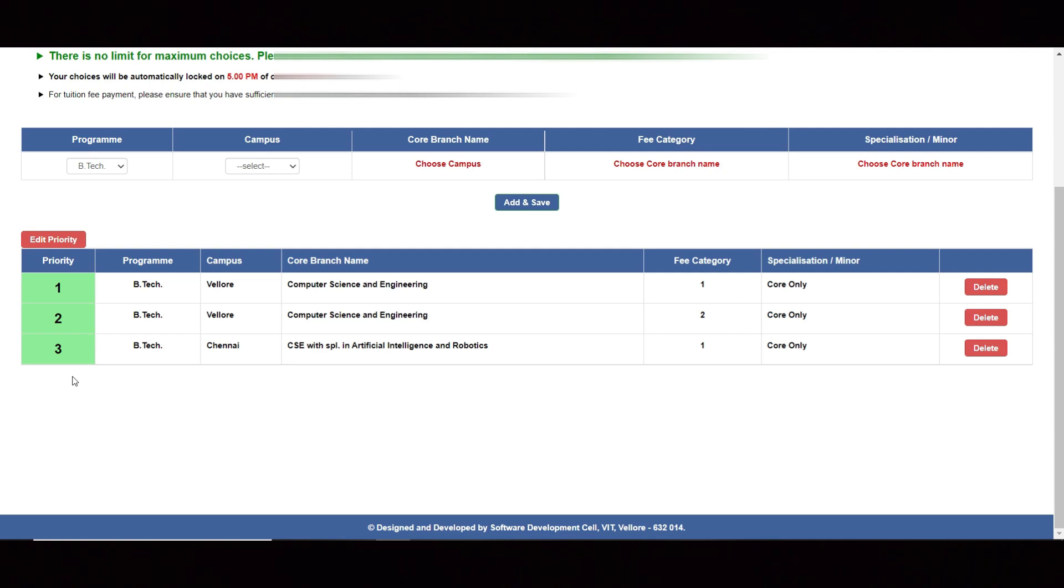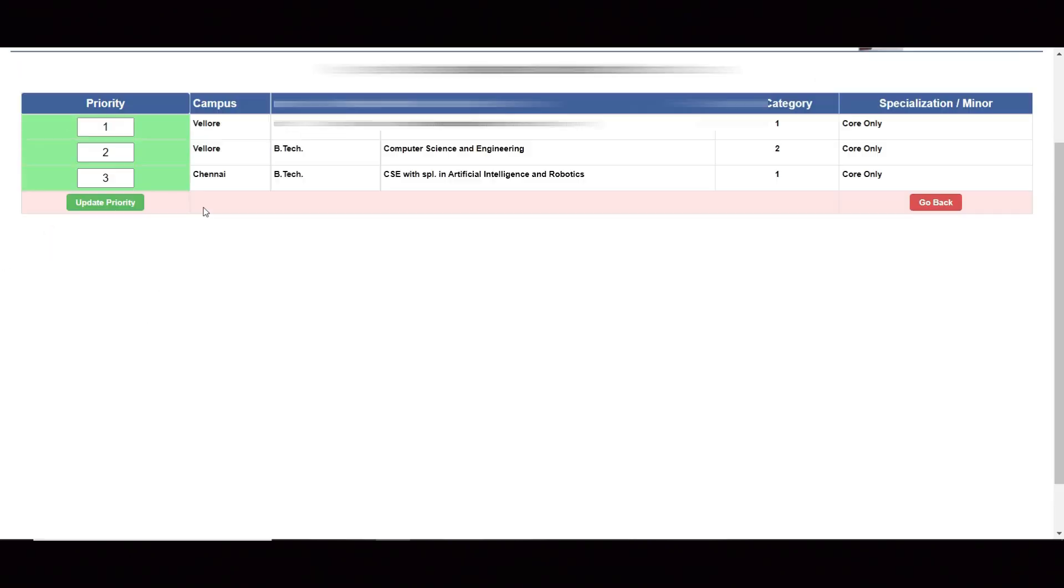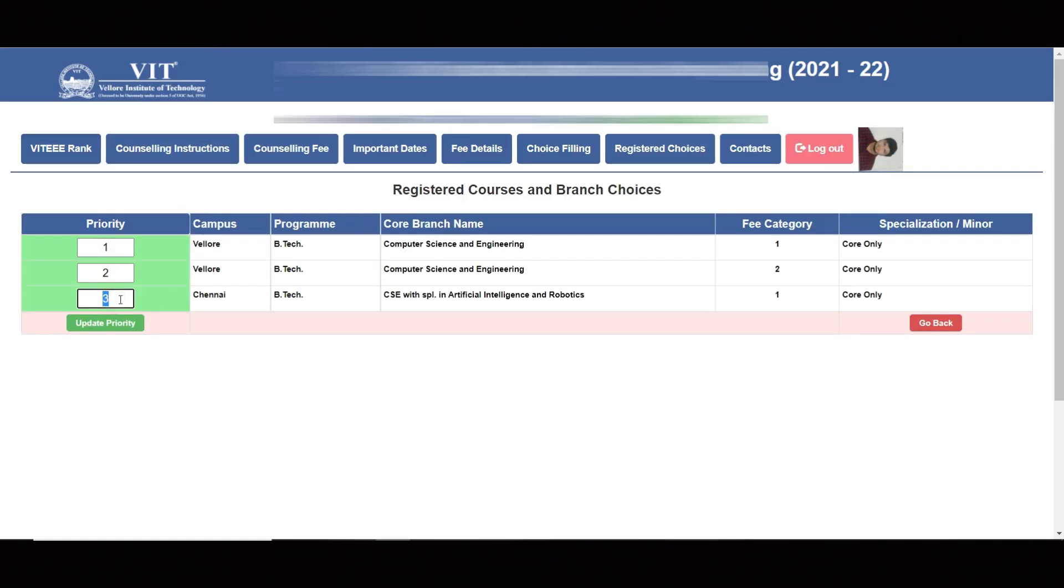Let me give you some more hints. If you see here edit priority option - if you click this and want to move this to second option, what you can do is just backspace, keep it 2, and just backspace, keep it 3.